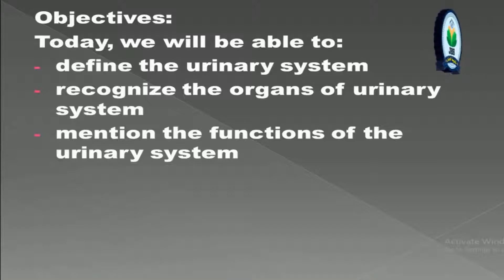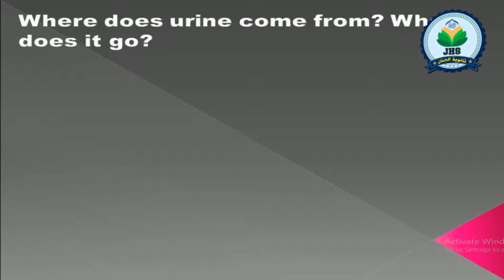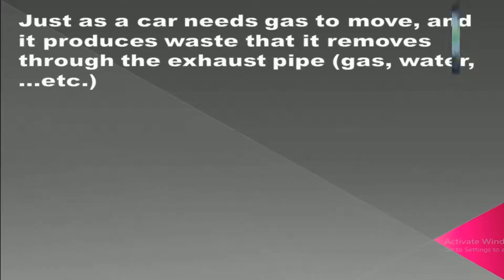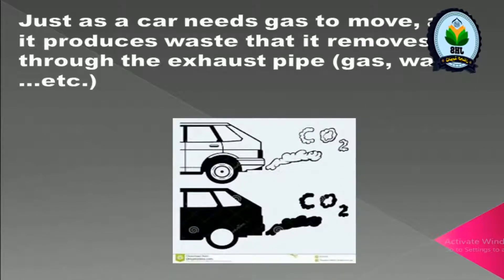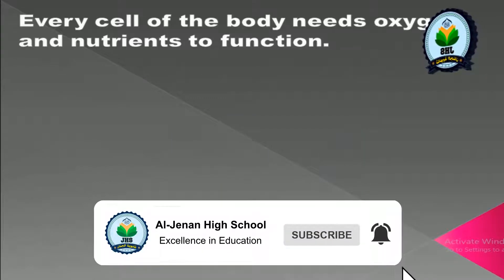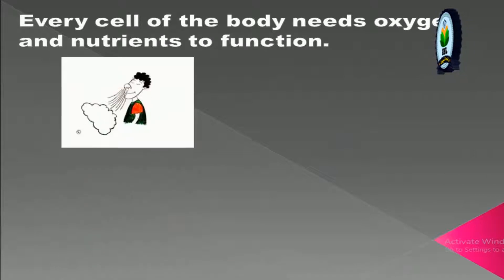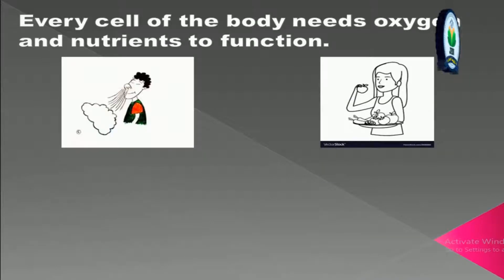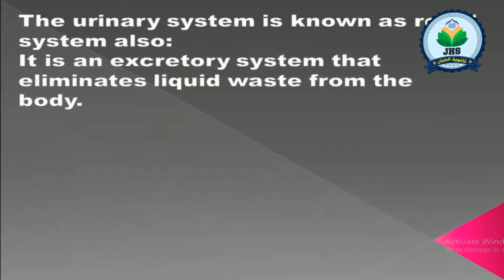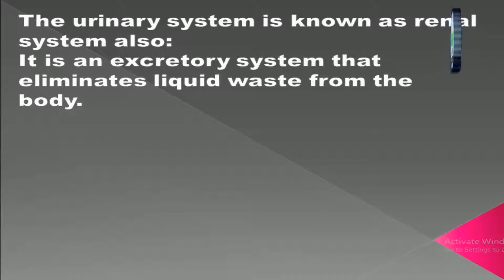Where does urine come from and where does it go? Just as a car needs gas to move and produces waste that it removes through the exhaust pipe, every cell of the body needs oxygen and nutrients to function, and it also produces waste. The urinary system, also known as the renal system, is an excretory system that eliminates liquid waste from the body.